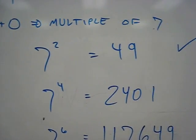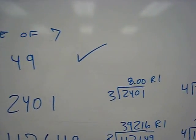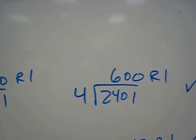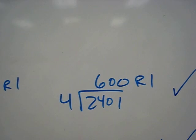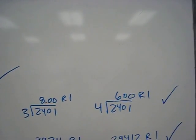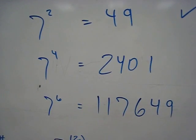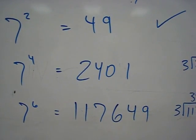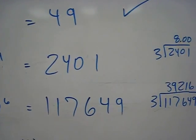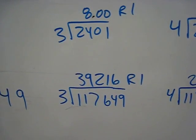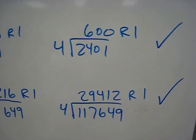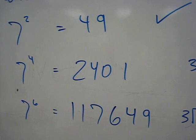So seven to the fourth is 2401. Divide that by three, you get 800 with a remainder of one, dividing by four, 600 with a remainder of one. And since they're both remainders of one, we know that's going to work. And seven to the sixth is 117,649, dividing by three, you get a remainder of one, dividing by four, you get a remainder of one. So we know that also works.